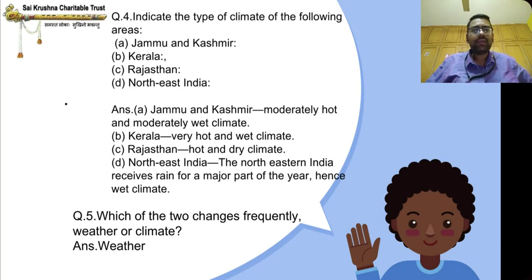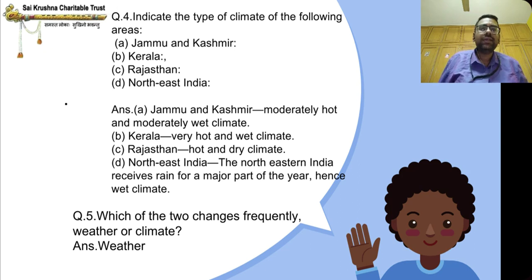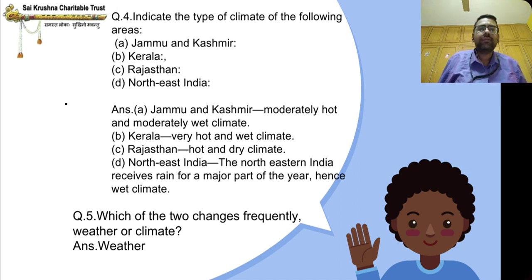Indicate the type of climate of the following areas. First, Jammu and Kashmir — moderately hot and moderately wet climate. It is not too hot nor too wet; it is moderately hot and moderately wet climate.